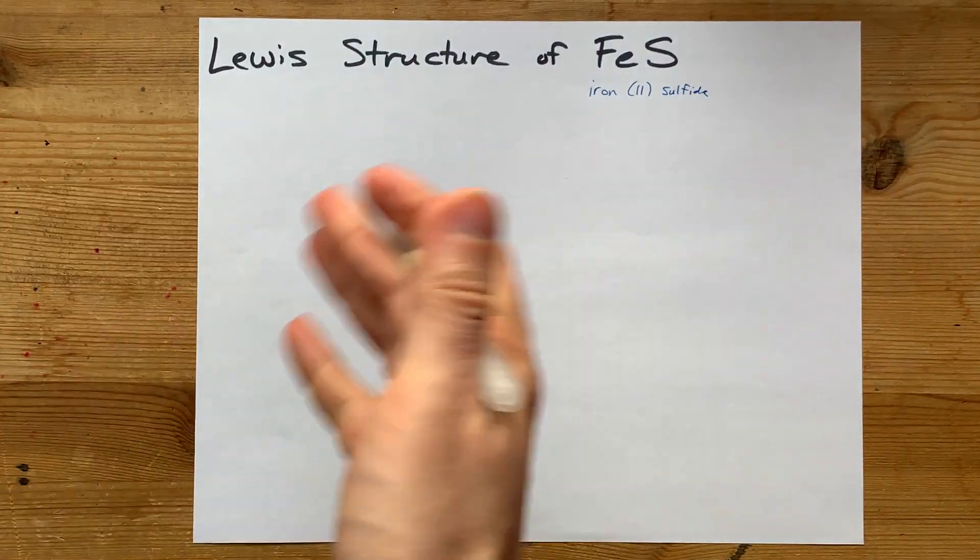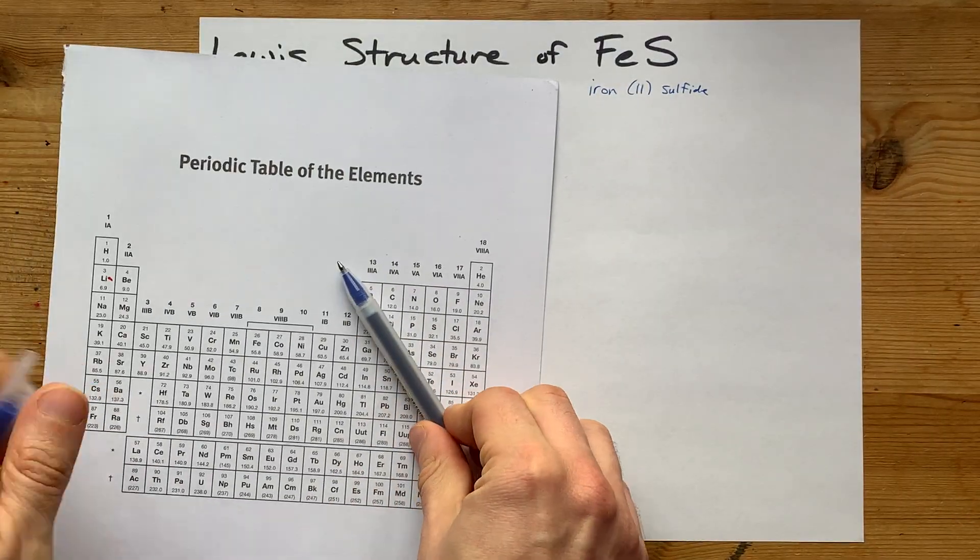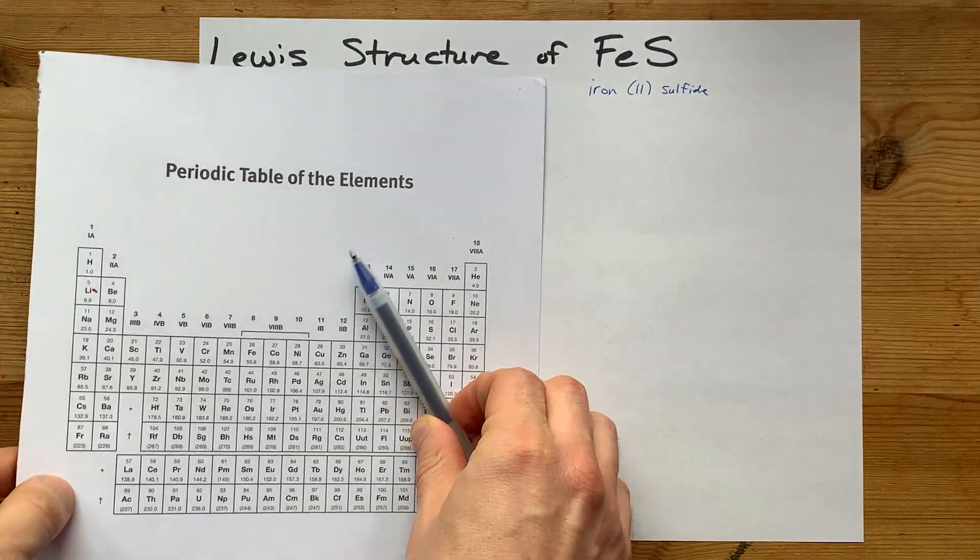Here we have iron, which is definitely a metal, bonding with sulfur, which is a non-metal. I know that because it's in the upper right-hand corner of the periodic table.